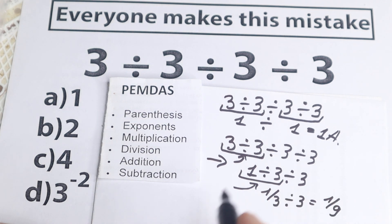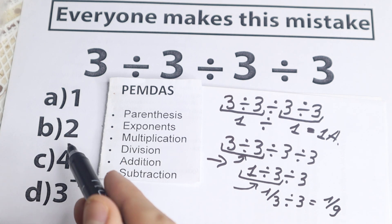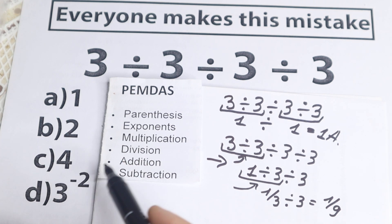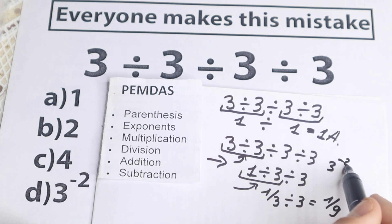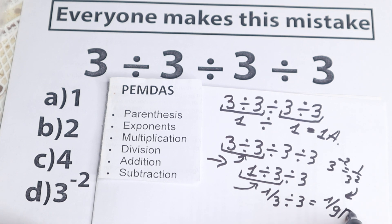And if you look at the options, a is incorrect, b incorrect, c incorrect, but d is 3 to the power minus 2. This is like 3 to the power minus 2. This is 1 over 3 squared, which is the same as right here. So the correct answer is option d, according to PEMDAS order.